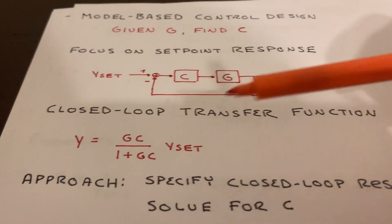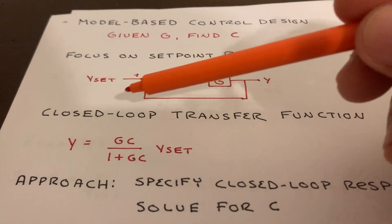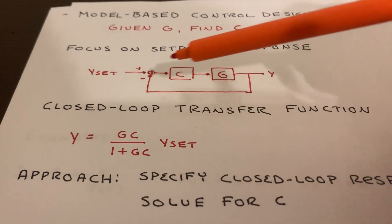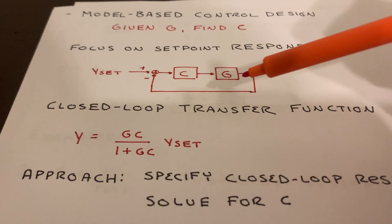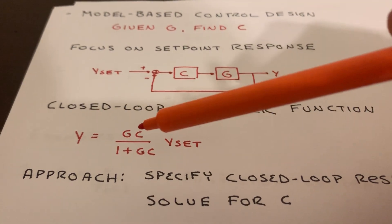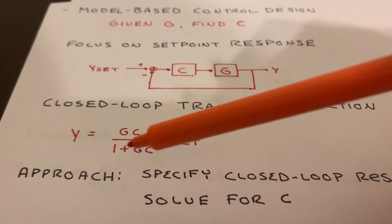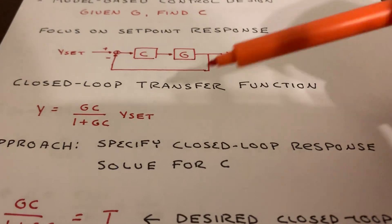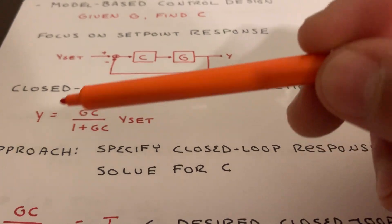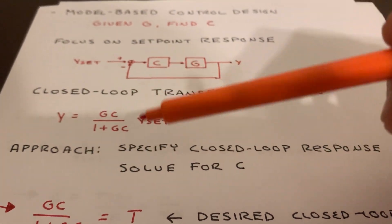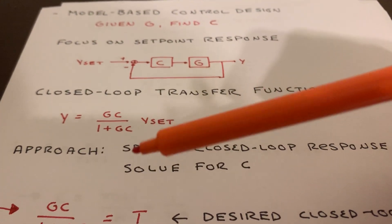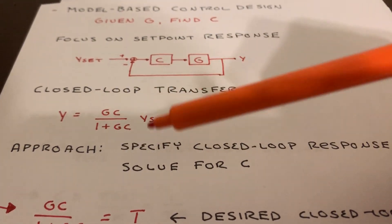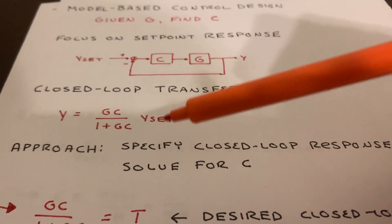We can next calculate what the closed loop transfer function is. It's the straight path, CG, divided by one plus what's in the loop, which is one plus CG. So we get Y is equal to GC over one plus GC times our set point. Our approach is going to be: we're going to try to specify what the closed loop response will be, and then solve for the associated controller that gives us the desired response to a set point change.